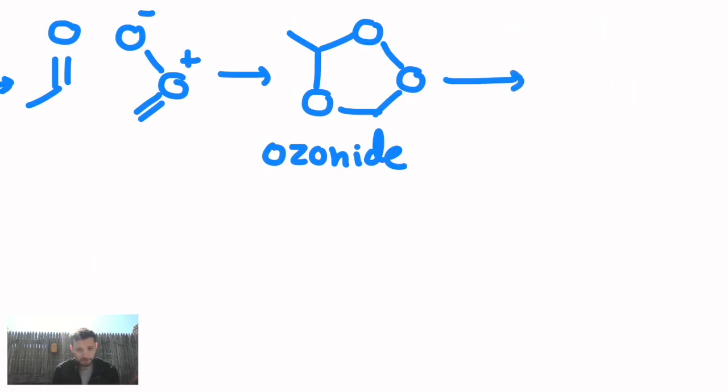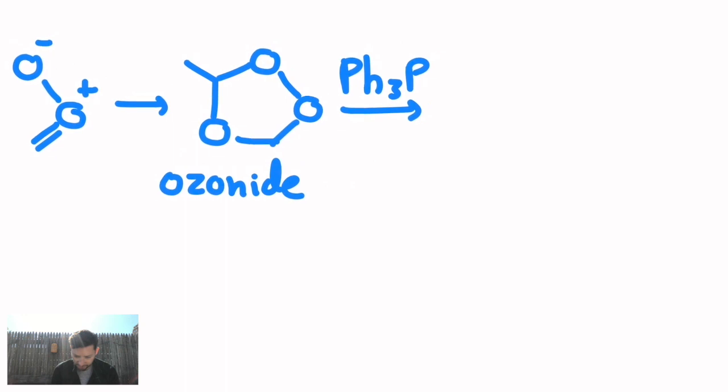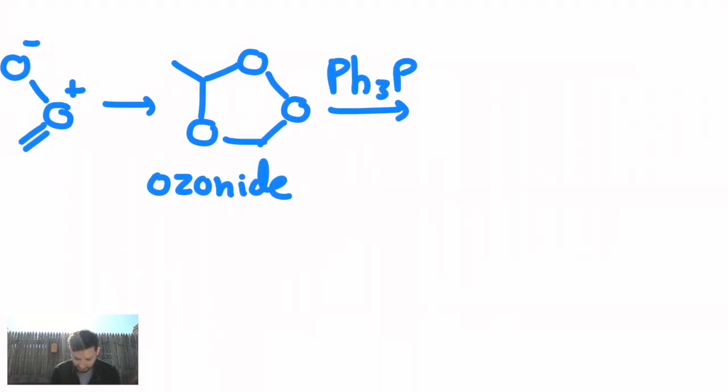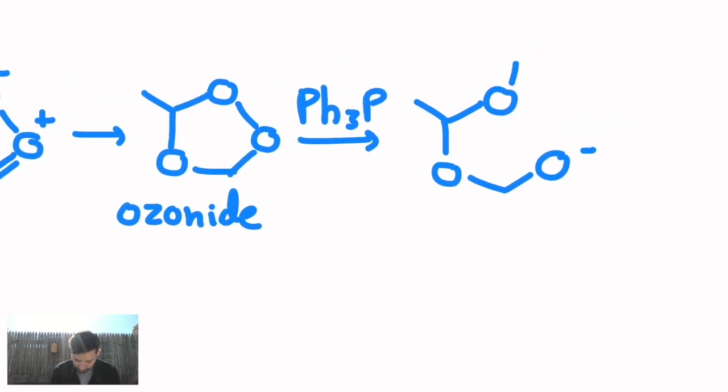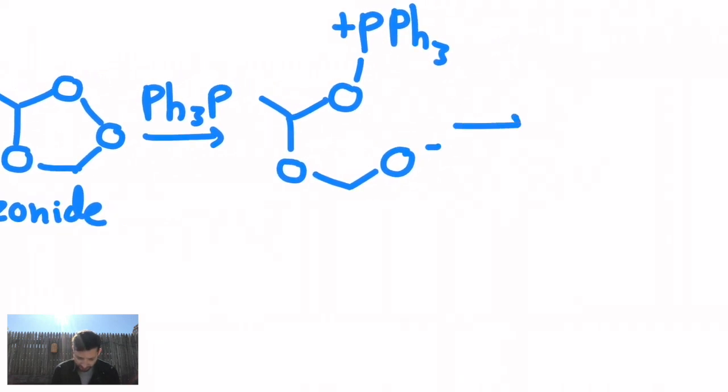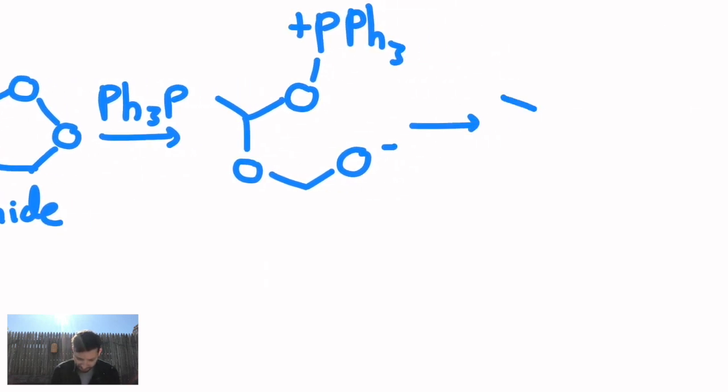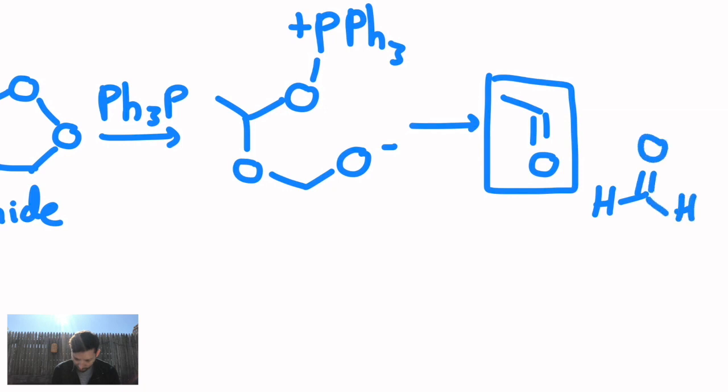And ozonides are actually the product of ozonolysis and an alkene. At this stage, we need to use a type of reducing agent. There's many. I'm going to use triphenylphosphine to show this. And triphenylphosphine will attack this ozonide. Give you another intermediate that opens the ring up with a positive charge on the phosphorus. And finally, this collapses to give you your acetaldehyde product, your formaldehyde product, and then a byproduct, which is triphenylphosphine oxide.